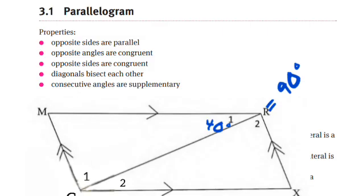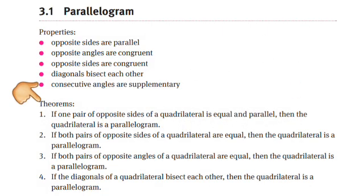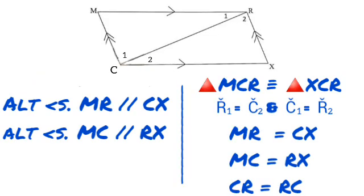The theorems at the bottom reiterate these properties with further explanation. Now, let's go back to our shape and diagnose it as a parallelogram. We start looking for parallel sides — specifically alternate sides. There are alternate sides MR and CX that are parallel to each other, and alternate sides MC and RX that are also parallel. So as far as parallel sides are concerned, what we have here is a parallelogram.